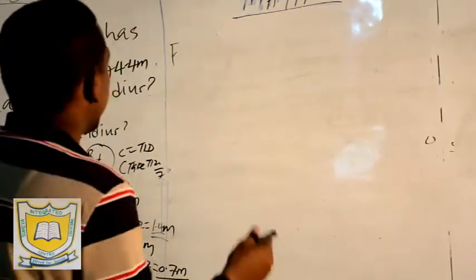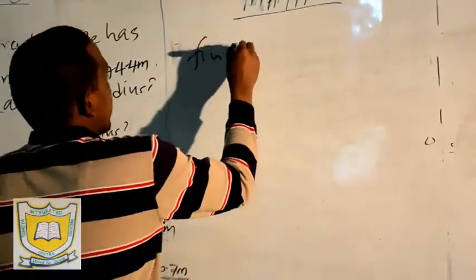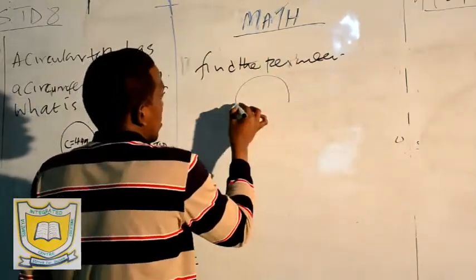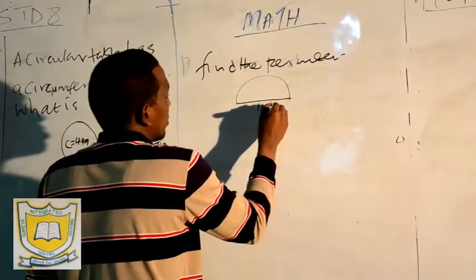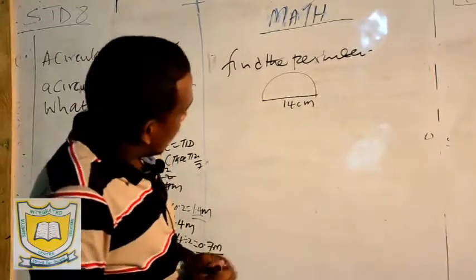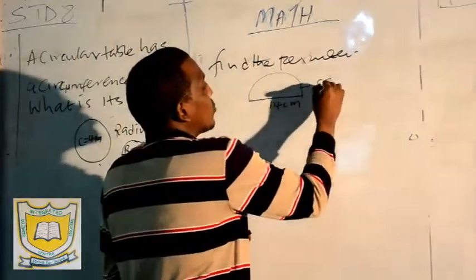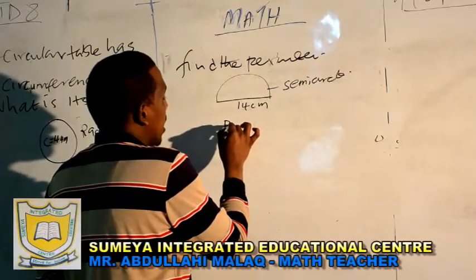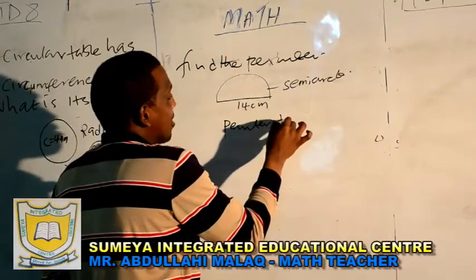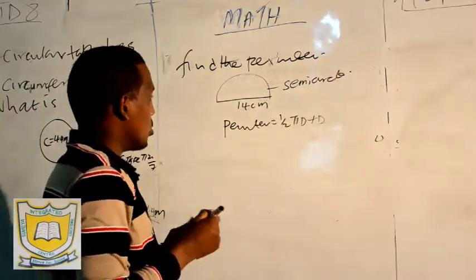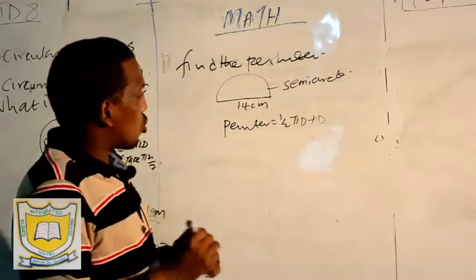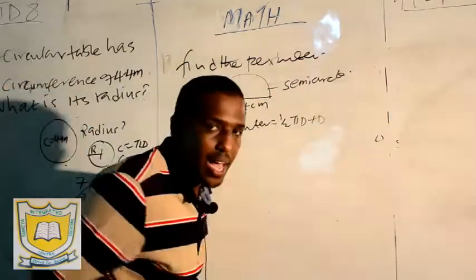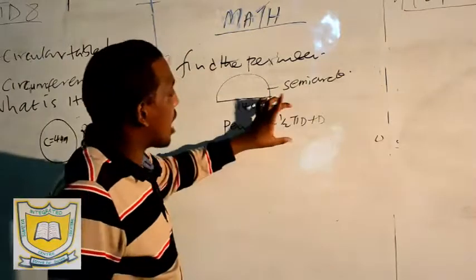Let us move to another question. You are told to find the perimeter, and they say 14 centimeters. This shape is called a semicircle — semi means half. The formula for the perimeter of a semicircle is: perimeter equals half times π times D plus D. The perimeter includes the circumference of the semicircle plus the diameter, the full line.